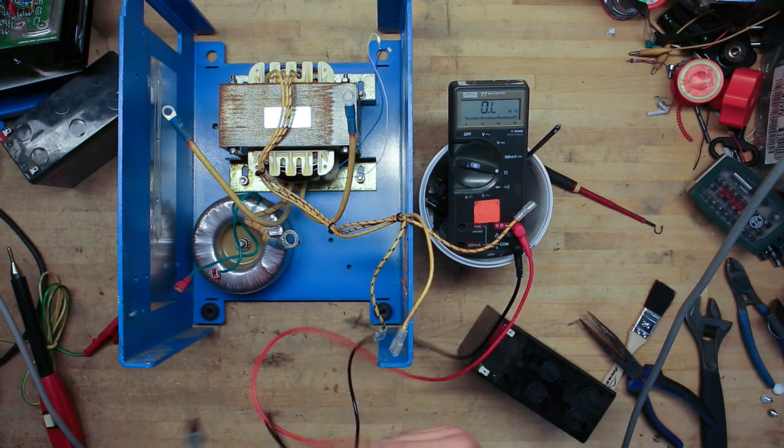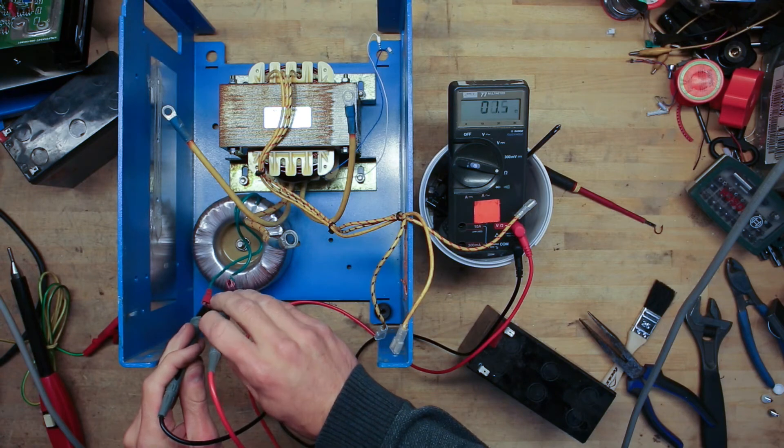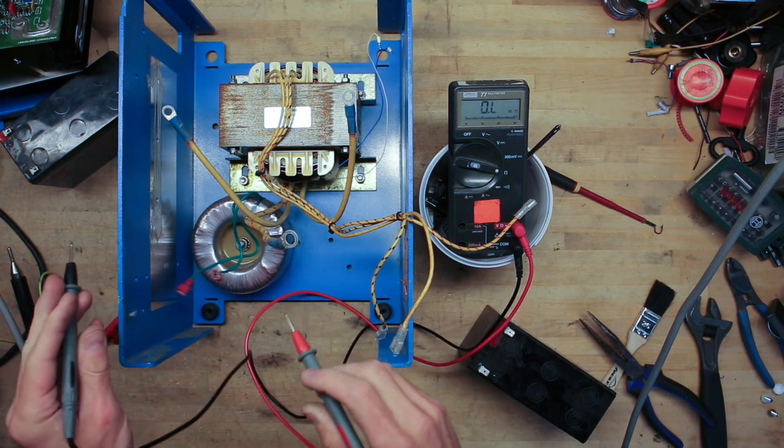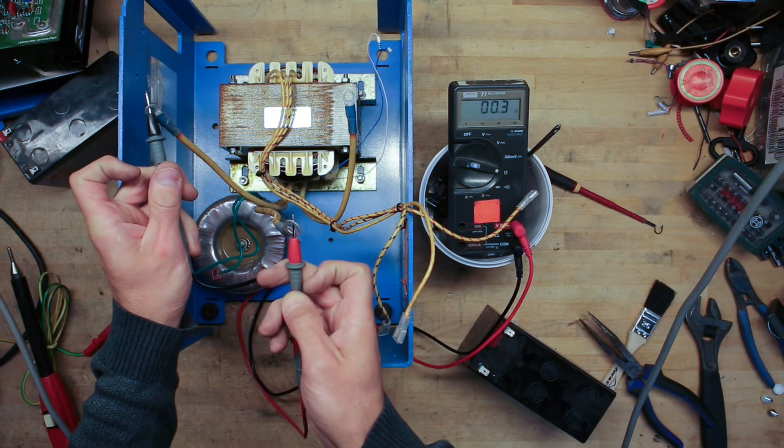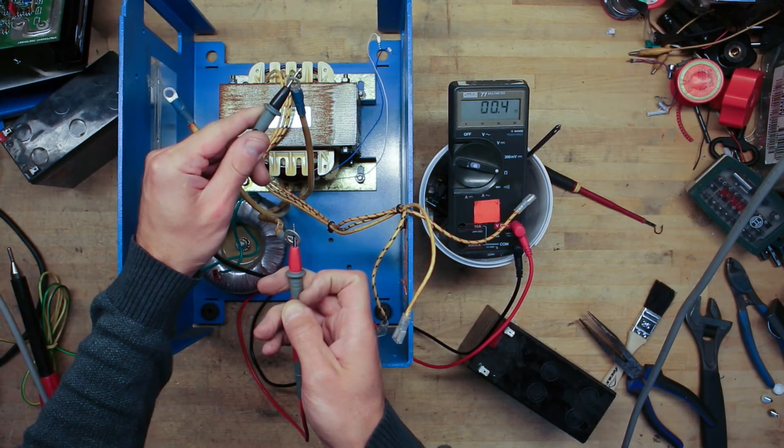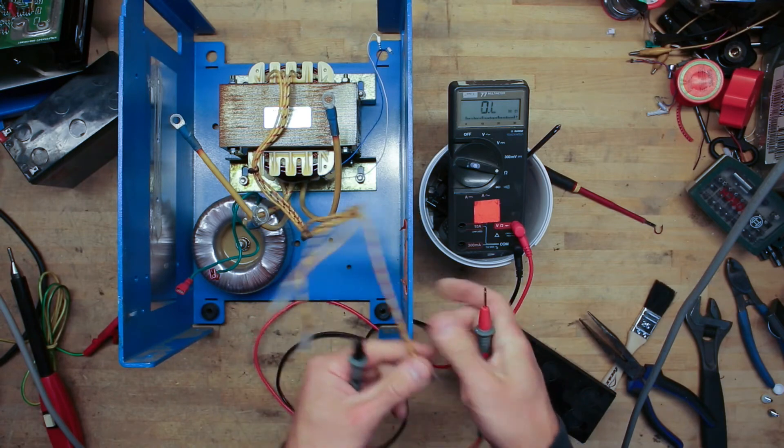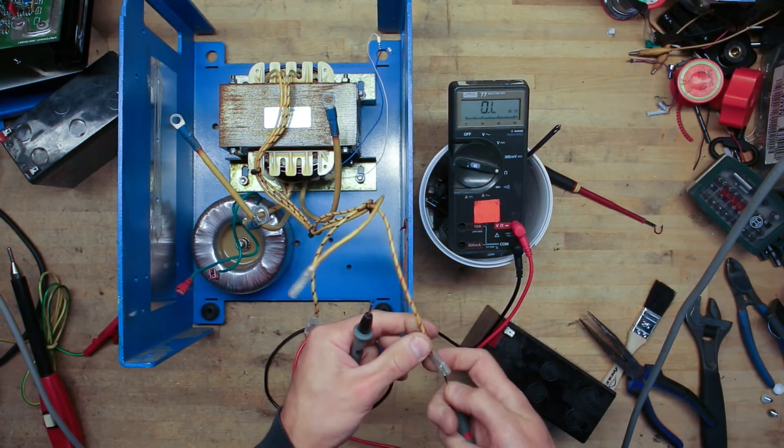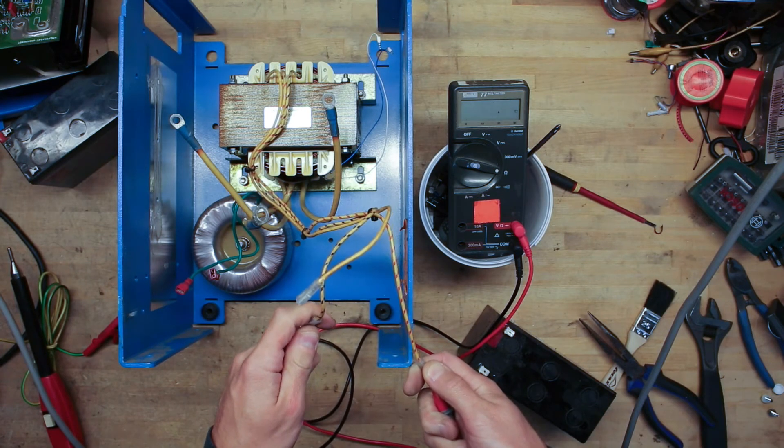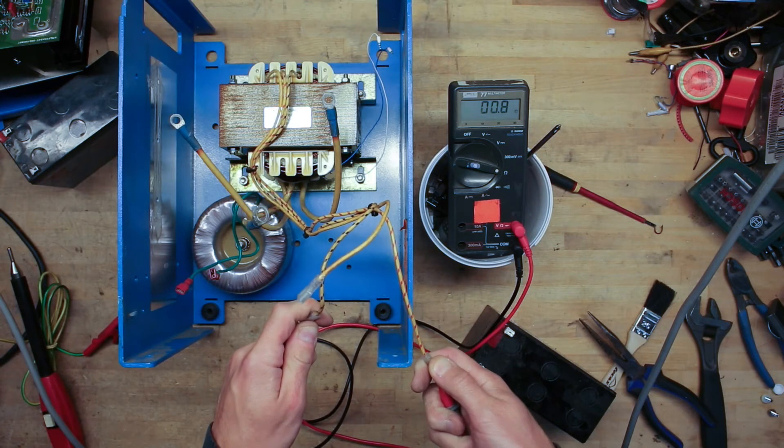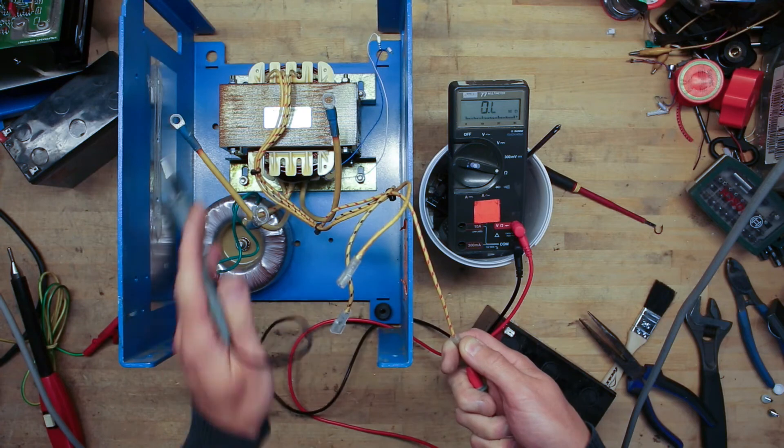Next thing we can do is check out the DC resistances of the magnetic components. So let's start out with the choke here. 0.5 ohm. Seems fine for such a large choke. Then we have center point on the secondary side. 0.3 ohm. Should have the same on the other then. 0.4. Seems about right. Then we have the primary side. We can assume this is center tapped as it's in the center there. But we will see. We'll just have to find somewhere where we have two even resistances. 1 ohm. And a bit less. But seems fine enough.